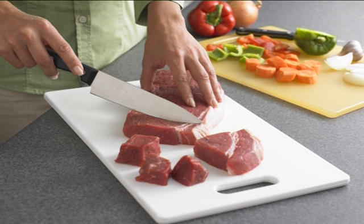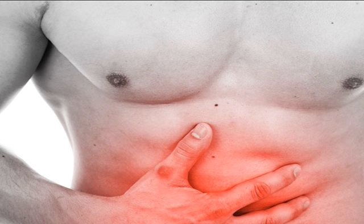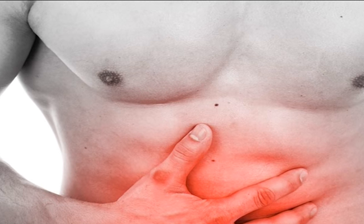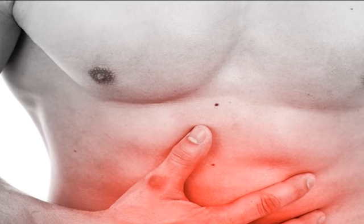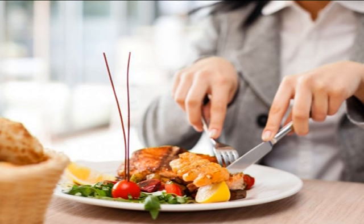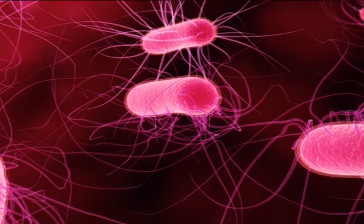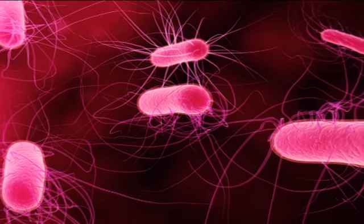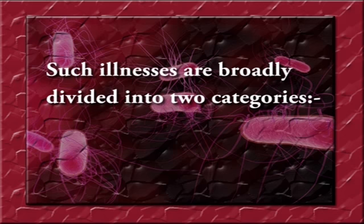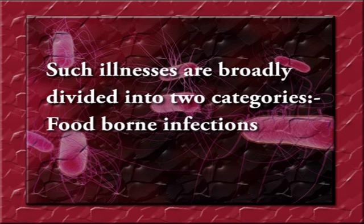It usually results from mishandling of food. These illnesses are characterized by a severe disturbance of the stomach and intestine, which occurs after consuming food in which the offending bacteria were given a chance to multiply. Such illnesses are broadly divided into two categories: foodborne infections and foodborne intoxications.